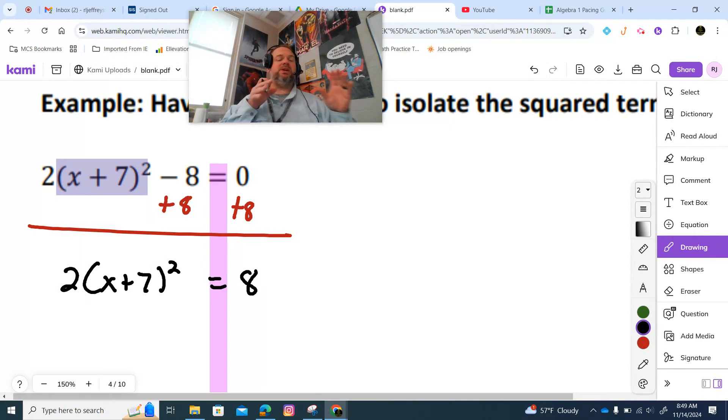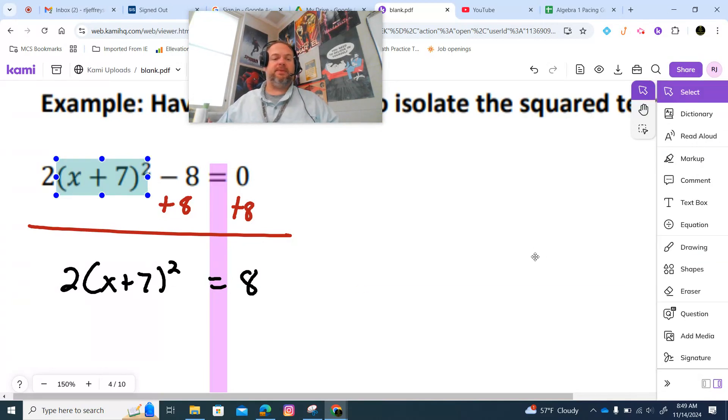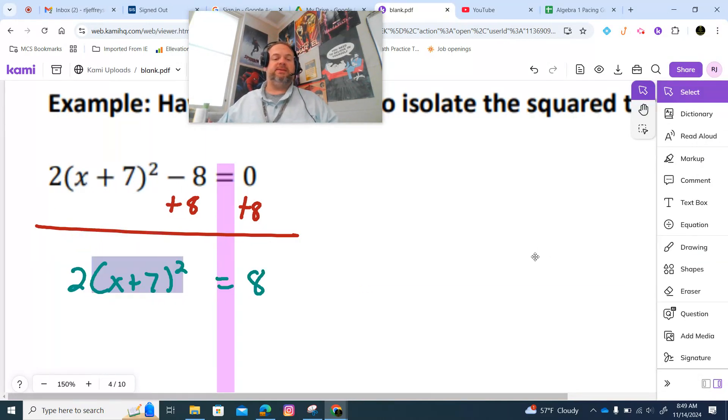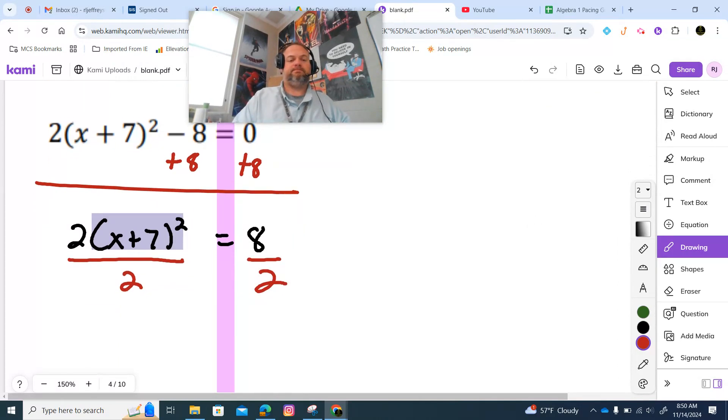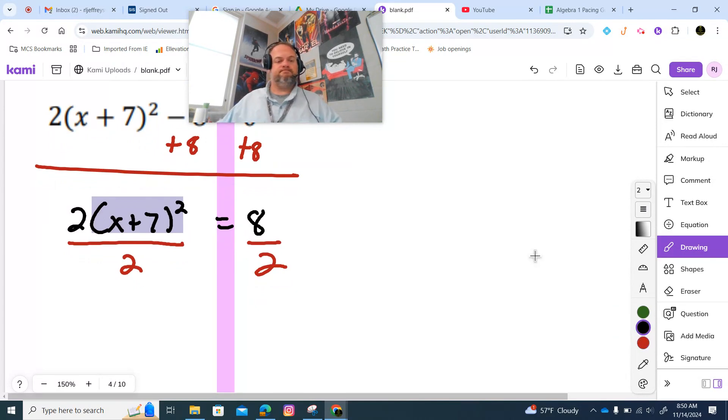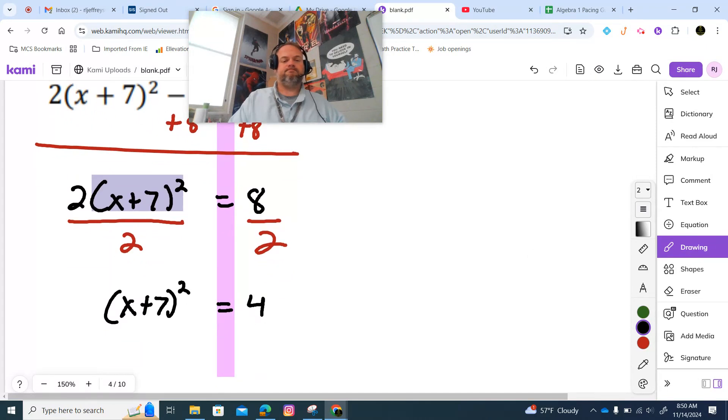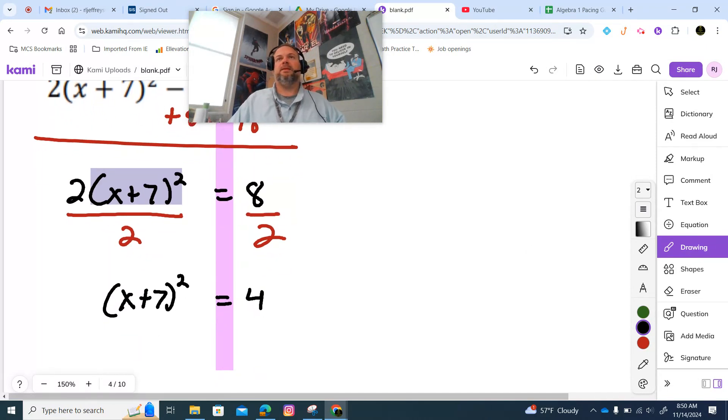Now that 2 is being multiplied by this whole thing, all of this. Remember, we're treating that whole thing, that x plus 7 quantity squared, as a variable. So what's the opposite of multiply? Divide.